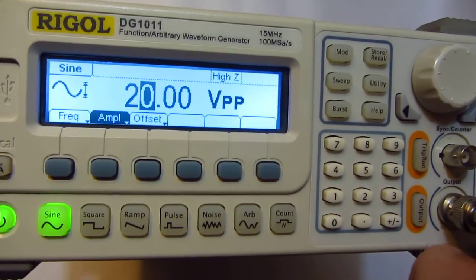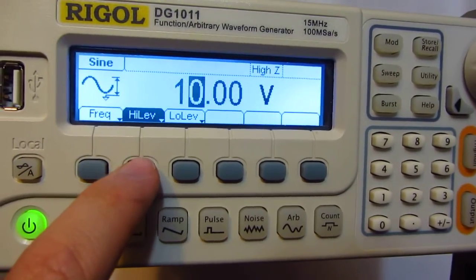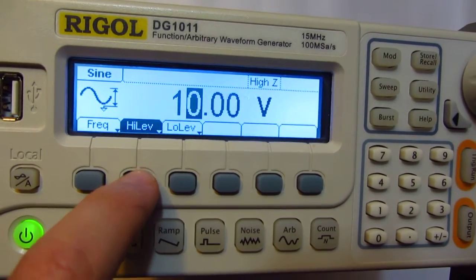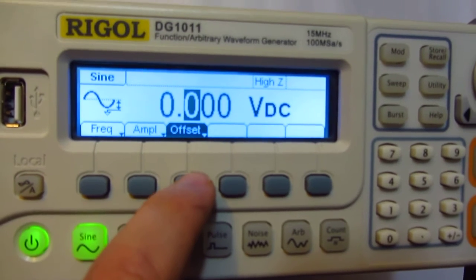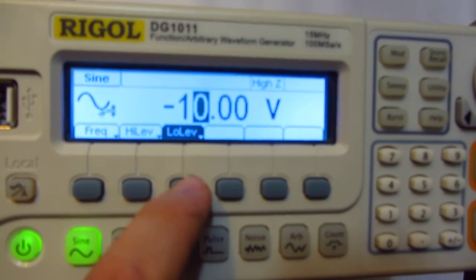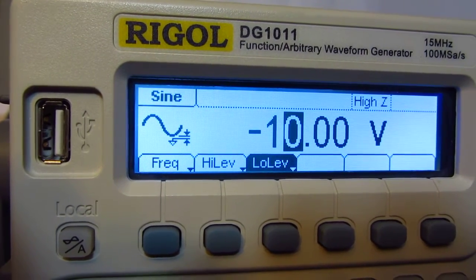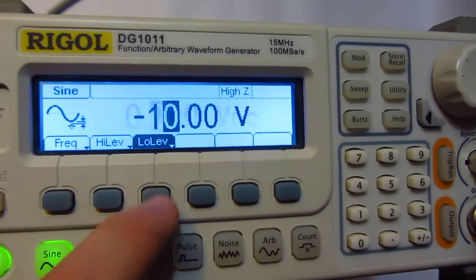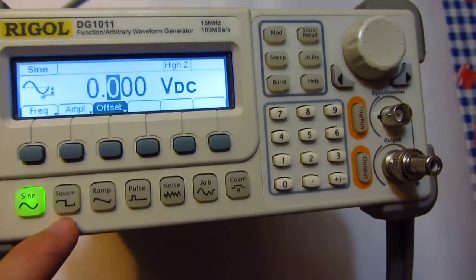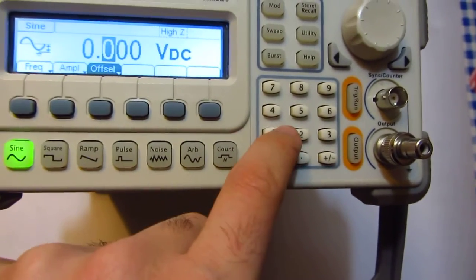Okay, and amplitude, high level, low level can be changed. Offset, high level, low level—you can change the height of the sine wave, move it higher or lower, something like that.